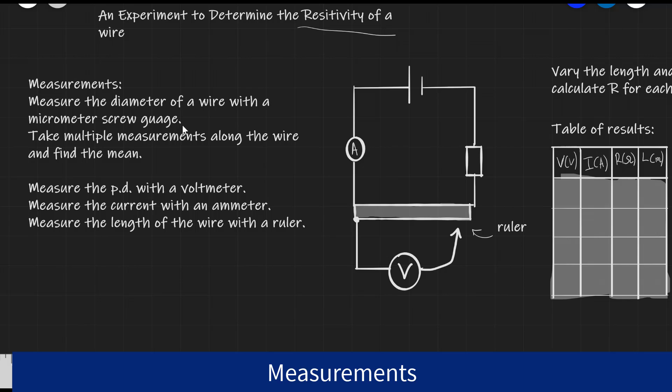Typically, the diameter of a wire is smaller than a millimeter or of the order of millimeters, so we definitely want to use a micrometer screw gauge. We're going to be taking multiple measurements along the wire, and then we're going to find the mean.